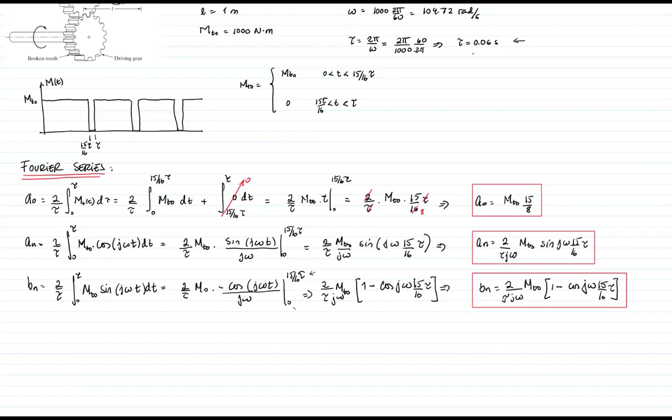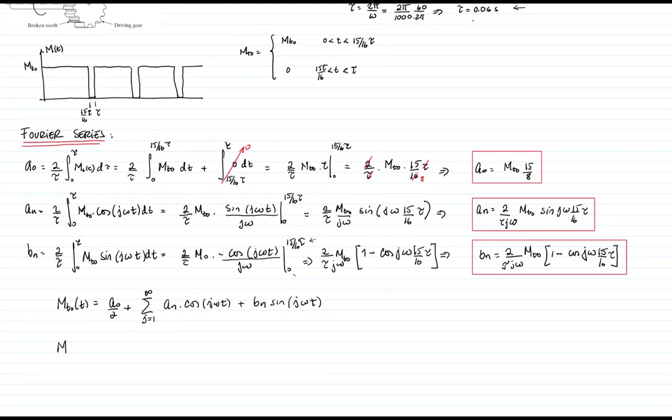The Fourier series will look something like: a₀ plus the summation from j equals 1 to infinity of [aₙ cosine(j ω t) plus bₙ sine(j ω t)].